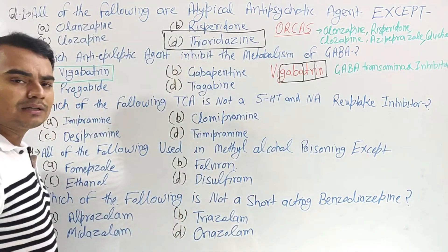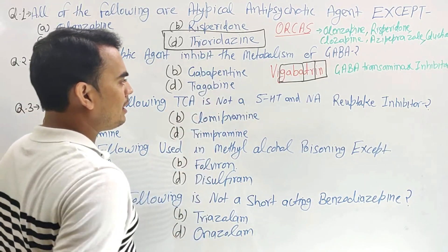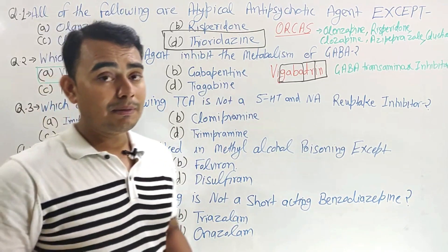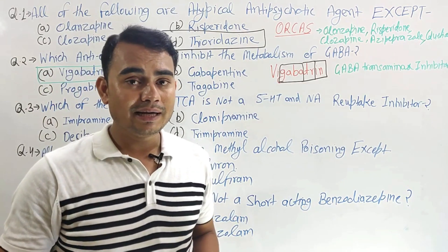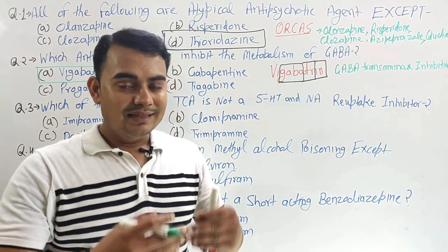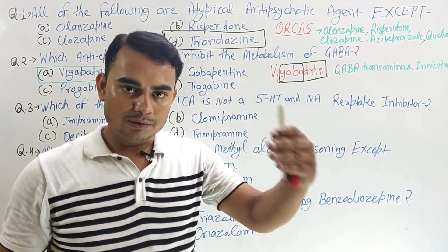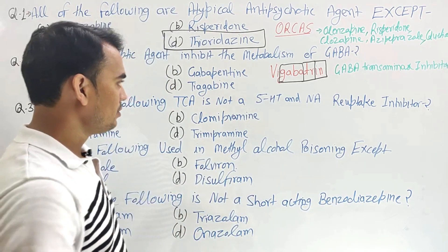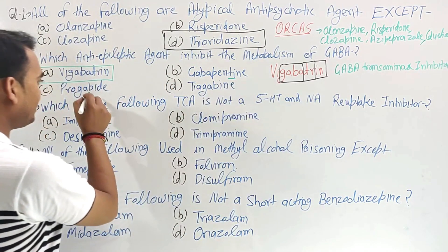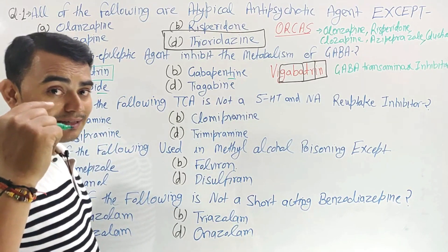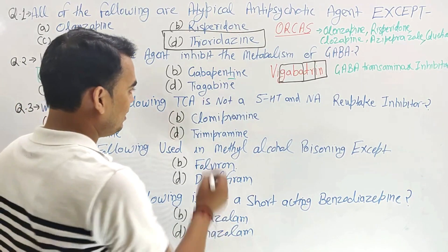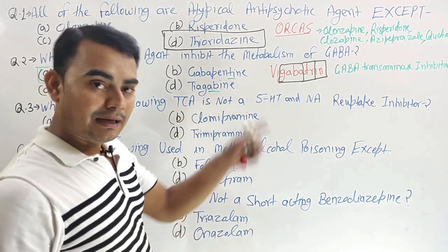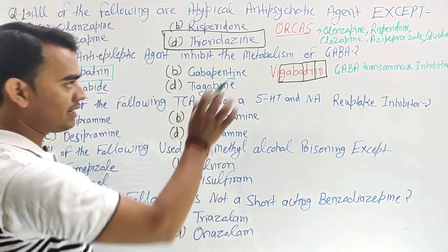Let's also discuss the other drugs. Gabapentin and progabide — these both drugs increase the release of GABA from vesicles to the synaptic cleft. Means gabapentin and progabide increase the release of GABA. And tiagabine mainly inhibits the reuptake of GABA.